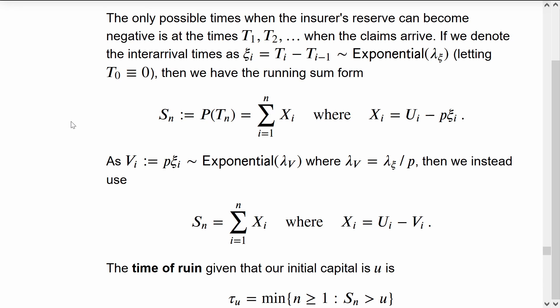We take away how much premium we've earned in the time since the previous claim. Because a constant times an exponential variable is also distributed as an exponential variable, we'll rewrite this psi as just V_i with the new rate parameter.